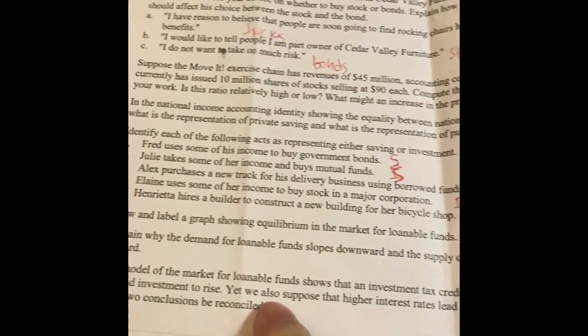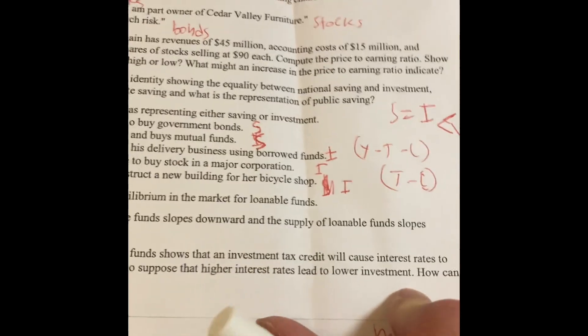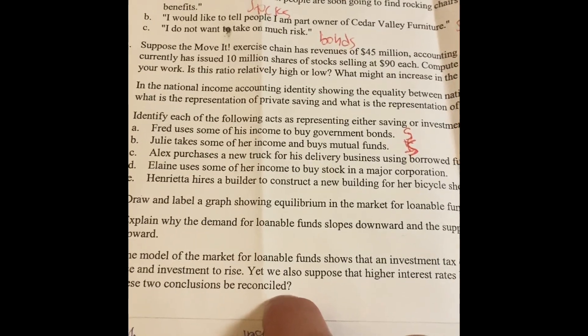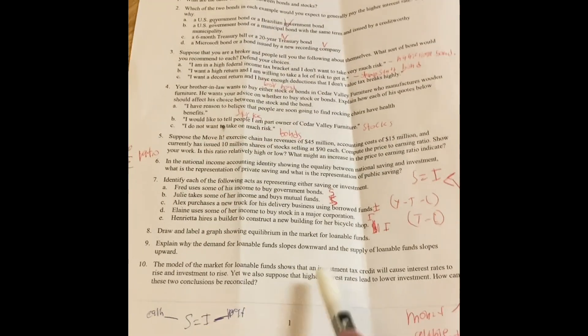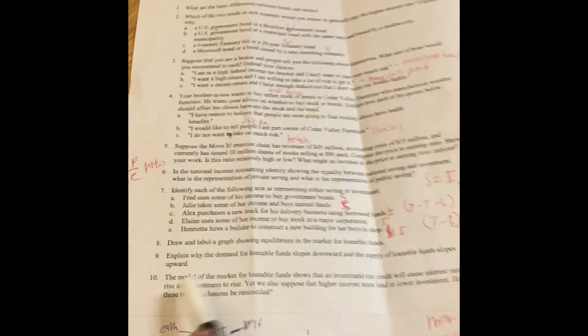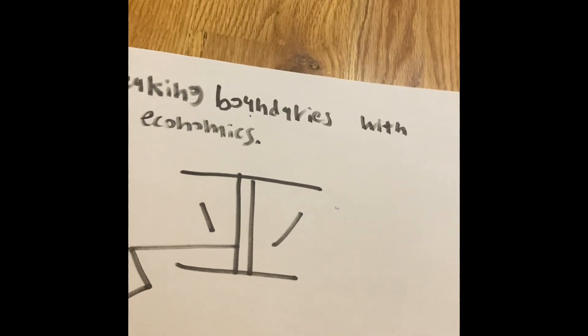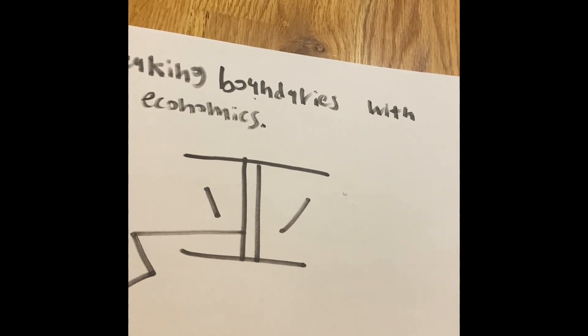We also suppose that higher interest rates lead to lower investment. How can these two conclusions be reconciled? Well, it's asking us how can we understand number 10 as a question for the scenario. First we got to take a look at what is the definition of an investment tax credit.